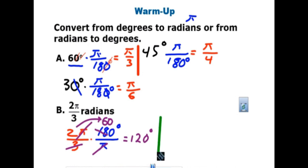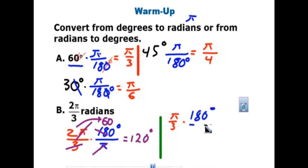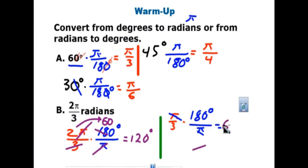Let's practice a little more. If I want to convert π/3 to degrees, I multiply again by 180/π. The π cancels, leaving 180 divided by 3. 18 divided by 3 is 6 — put the zero back — you get 60 degrees. So π/3 is 60 degrees. One-third of π is 60.